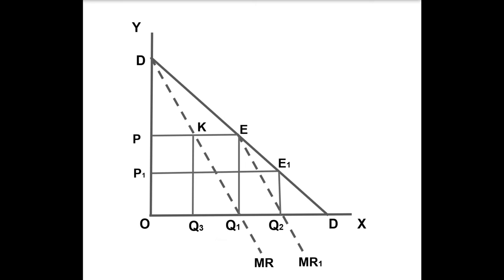Thus, by recognizing their interdependence, each seller shares equally the monopoly industry output OQ1, seller A selling OQ3 and seller B selling Q3 Q1. They also share the total monopoly profit OQ1 EP equally between them. A earns OQ3 KP and B earns Q3 Q1 EK at the monopoly price OP.